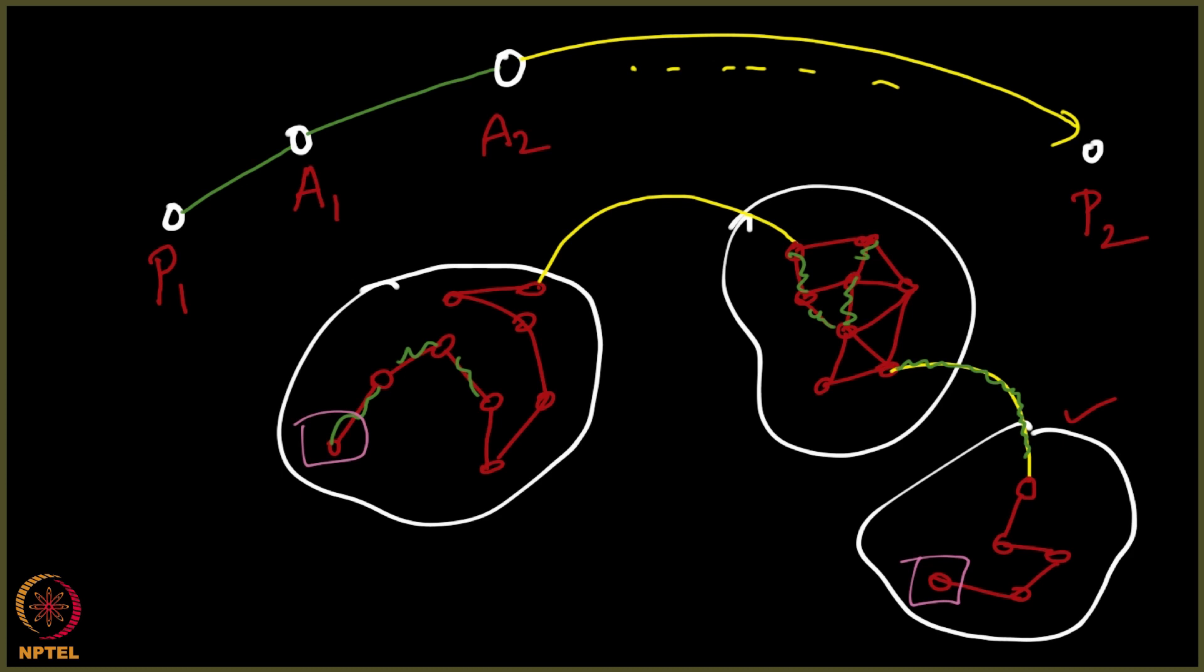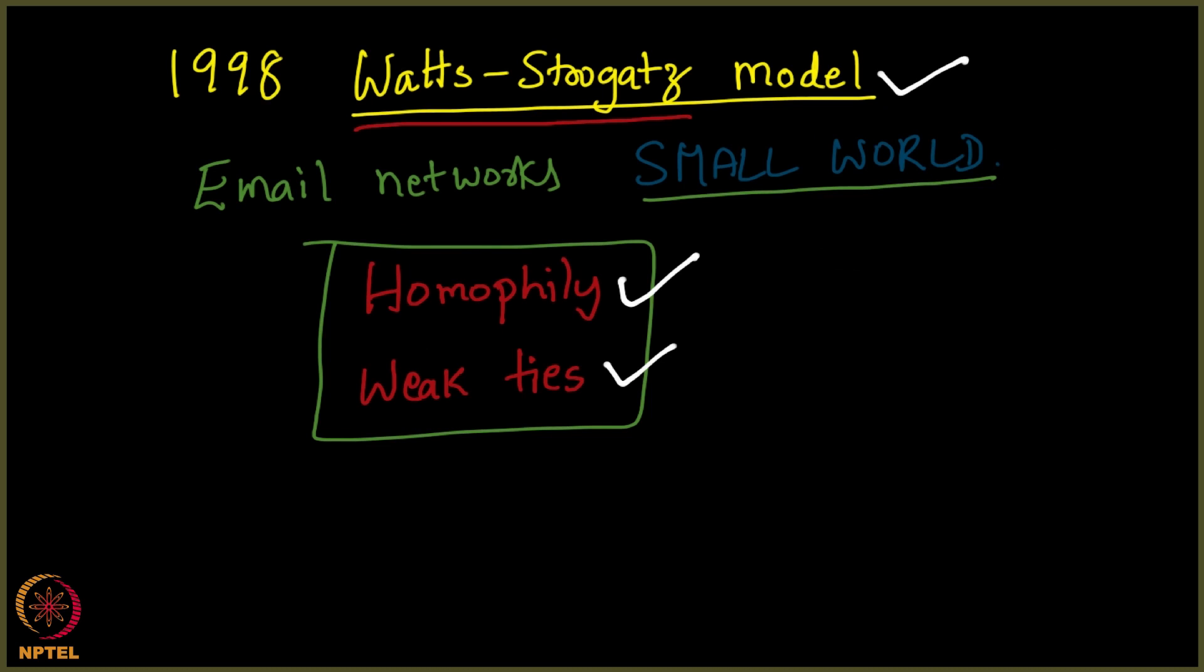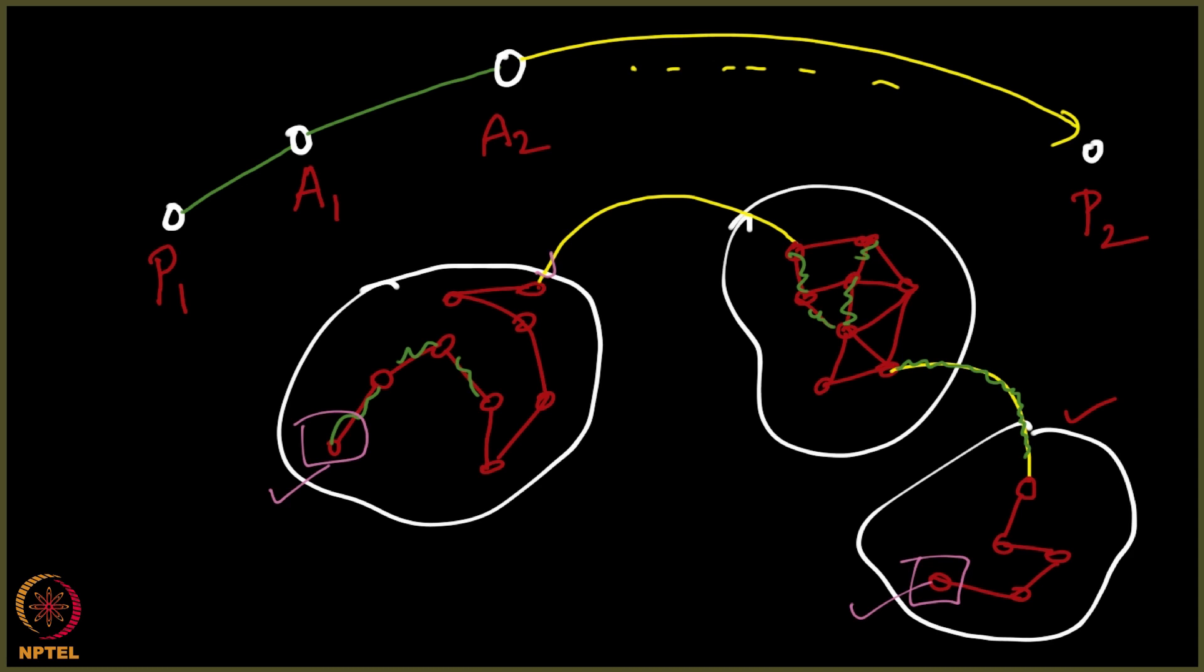From the source it reaches the desired destination mainly because of two things: homophily and the notion of weak ties. By weak ties I mean the edges such as this which we have studied in depth already. It is homophily coupled with weak ties that result in such a phenomena.